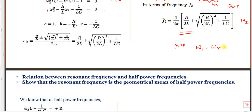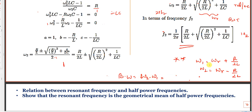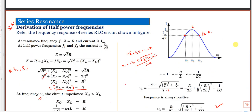So the simplified formulas are: ω₁ = ω_R − R/2L and ω₂ = ω_R + R/2L. Bandwidth is given by ω₂ − ω₁. The ω_R terms cancel: (ω_R + R/2L) − (ω_R − R/2L) = 2·(R/2L) = R/L. So bandwidth = R/L. This is a very important result.